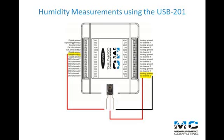First, connect the VC-plus from the HIH-4000 sensor to the plus VO pin of the USB-201.